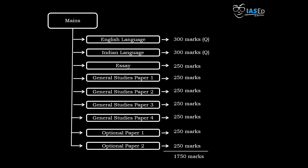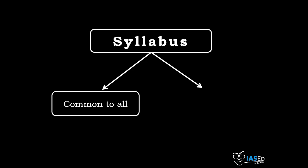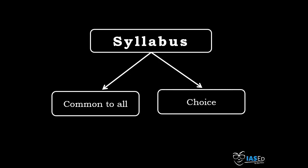We must remember that we choose one optional subject which is further divided into two papers. This entire syllabus can broadly be divided into two categories. The first is common to all, where every aspirant appears for the same syllabus with no choice. The second category is where you have a choice — one Indian language paper and two papers of one optional subject chosen from the given list. You must choose this subject very carefully because your entire destiny depends on it.